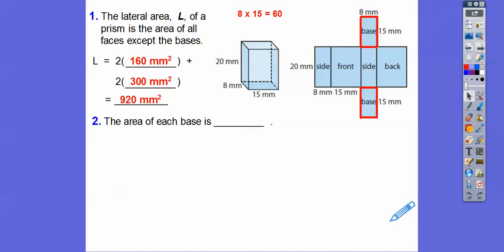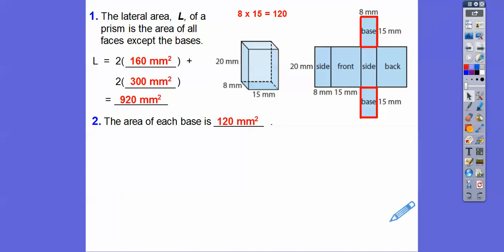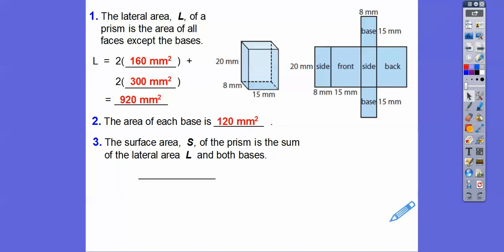Now the area of each base: the bases are 8 times 15. 4 times 15 is 60, so 8 times 15 is 120. Each base is 120. The surface area of the prism is the sum of the lateral area and both bases, so don't forget there are two bases of 120. The total surface area is 1,160 square millimeters — always square units.